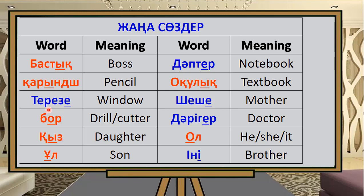Teresi means 'window.' The next word means 'drill or cutter.' Qiz means 'daughter.' Oul means 'son.' Daaptir means 'notebook.'